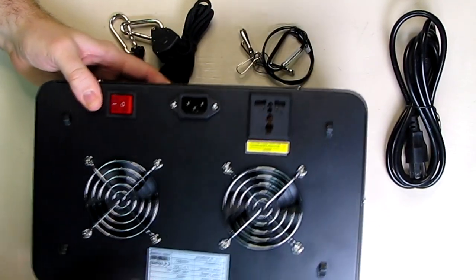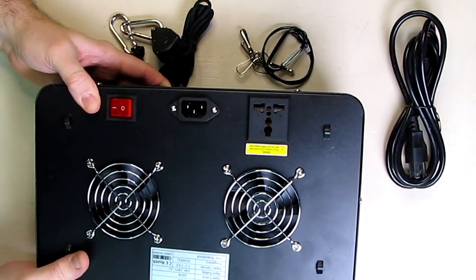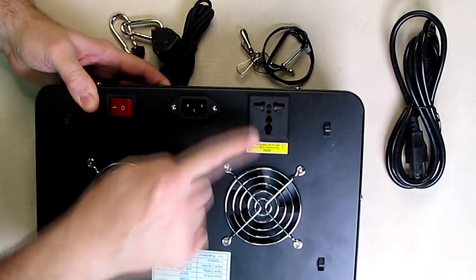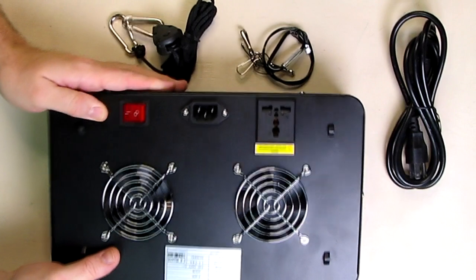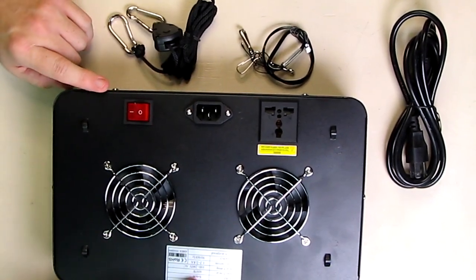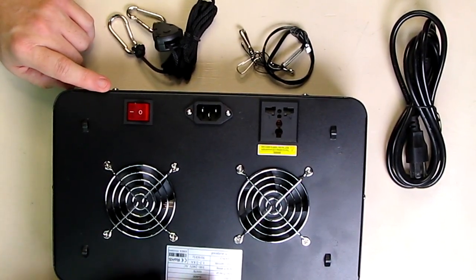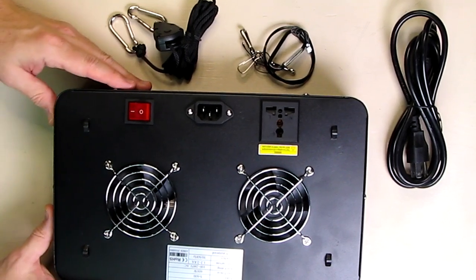Looking at the back, you can see it has two computer fans, a daisy chain port right there, and a master power switch. Then it has the model number, the equivalent watts, and other information about it.